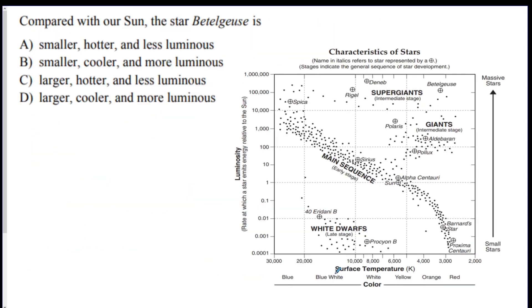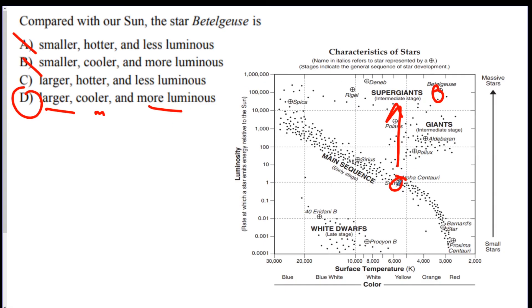Another HR diagram question: compared with our sun, the star Betelgeuse is what? Betelgeuse is more luminous and bigger, so we can eliminate any answer with 'smaller.' Checking the chart, the sun is at a little less than 6,000 Kelvin and Betelgeuse is a little more than 3,000 Kelvin — so it's way cooler. Betelgeuse is larger, more luminous, and cooler in temperature. D is the correct answer.